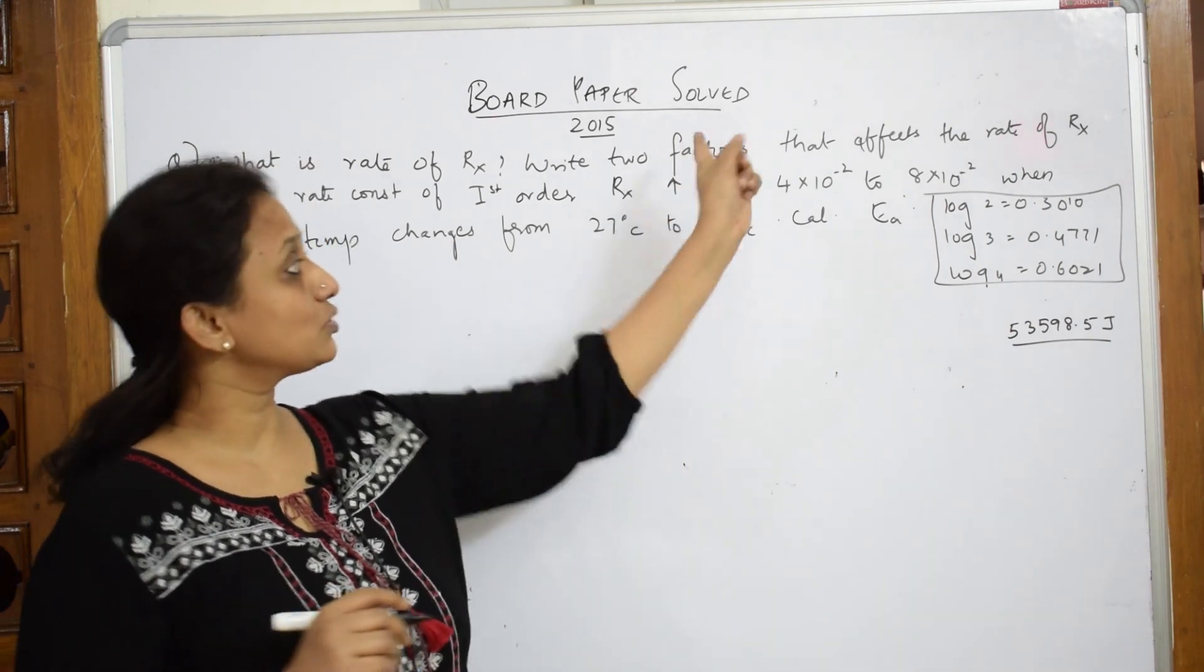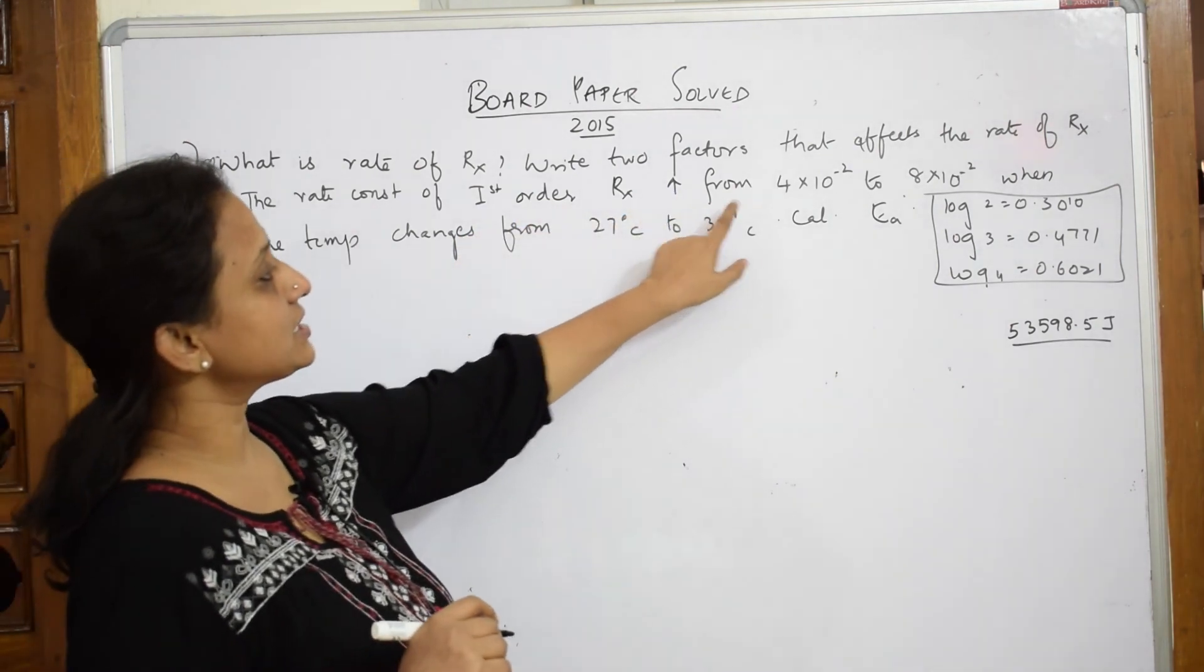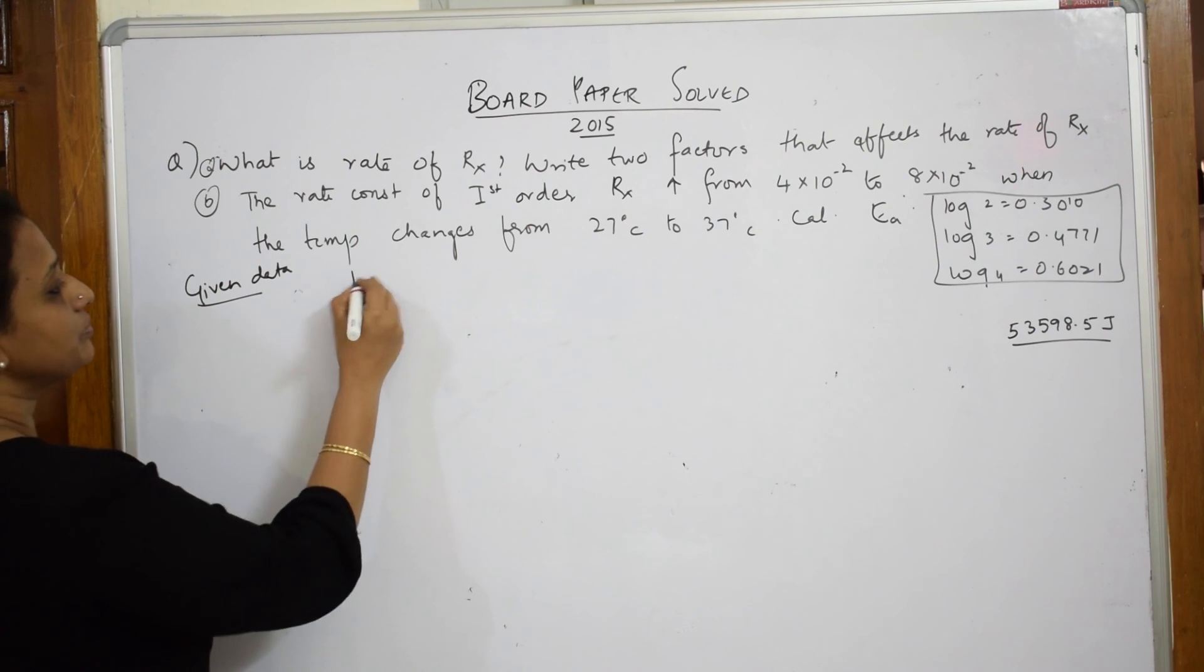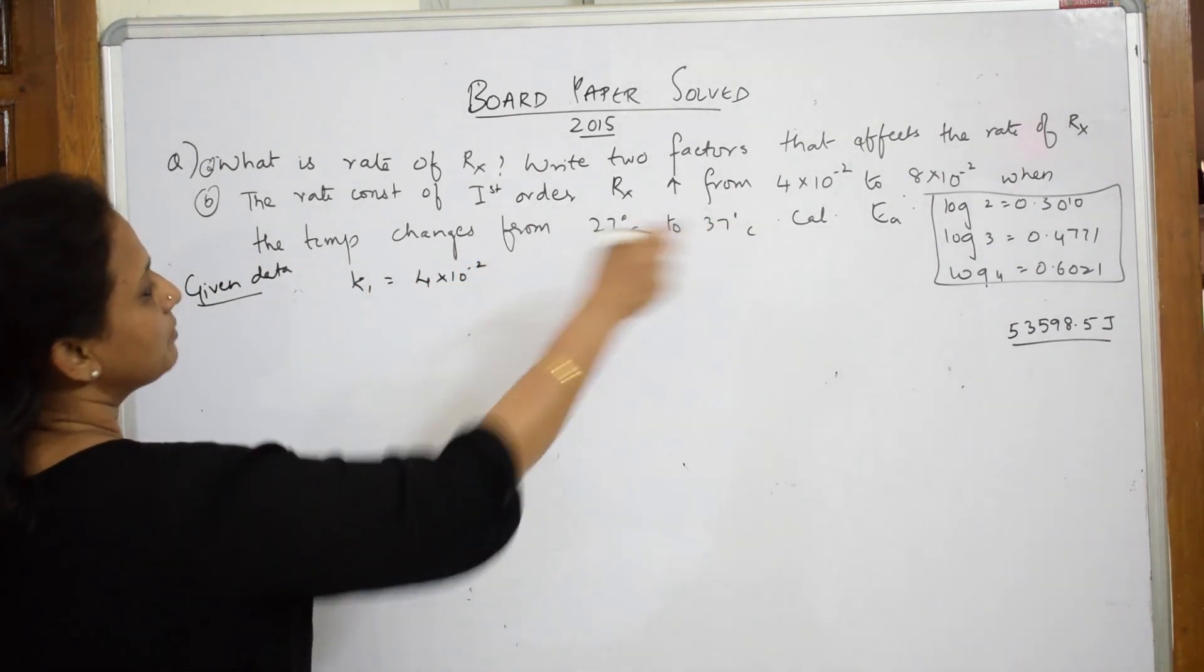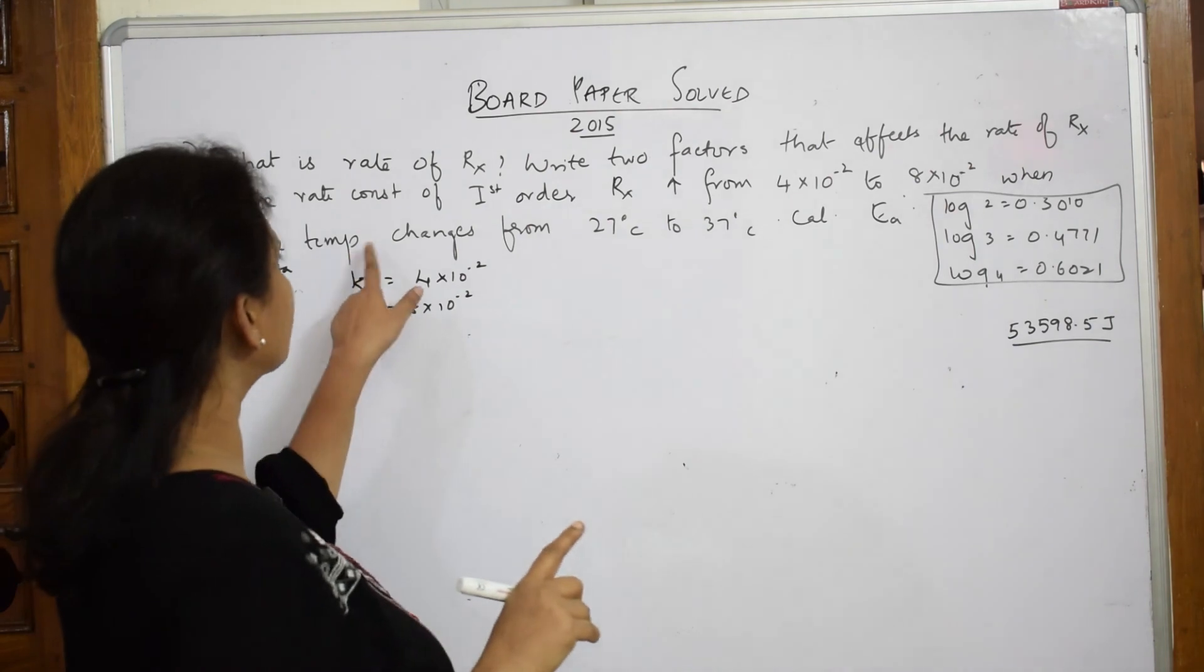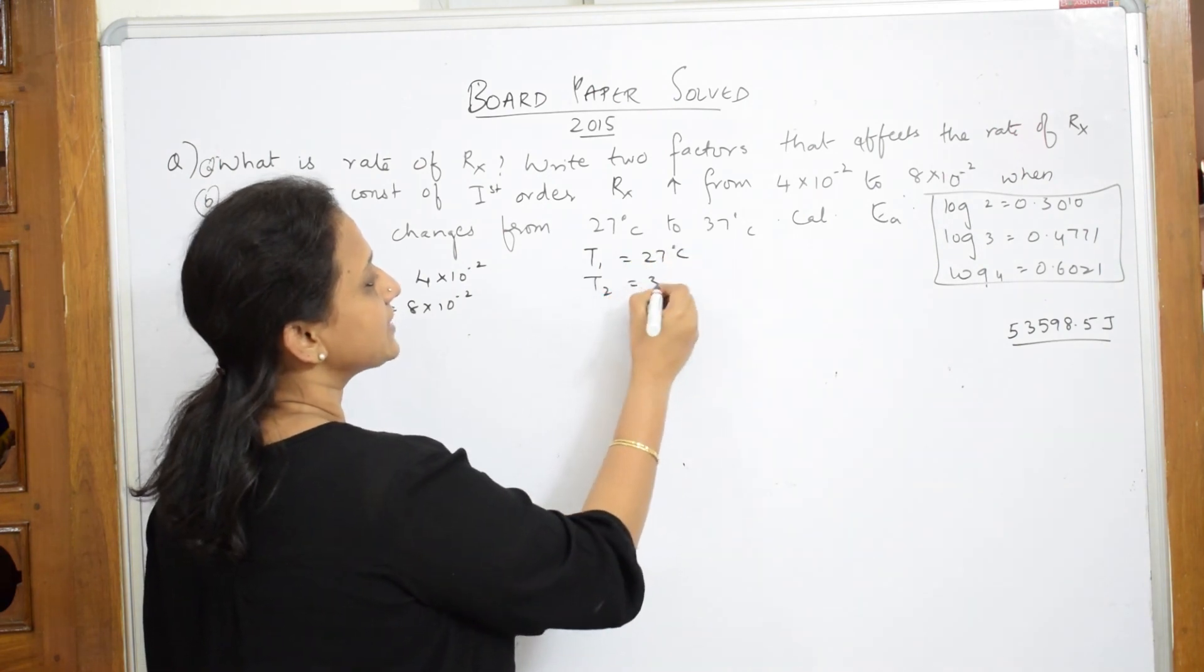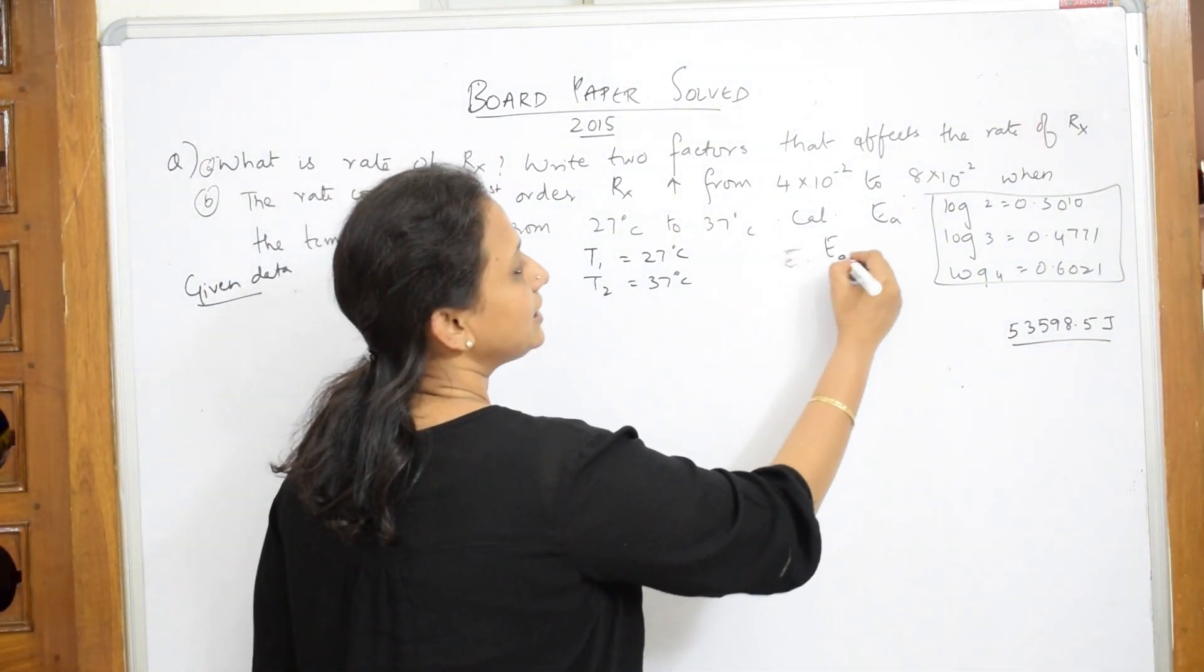Let us come and solve the numerical. Please watch the video for the first question properly. The rate constant of the first order reaction increases from... they have given me rate constant. Write the given data first. K1 is 4 into 10^-2, K2 is equal to 8 into 10^-2. The temperature changes from T1 is 27 degrees and T2 is 37 degrees centigrade. What should I calculate? I have to calculate EA, the activation energy.